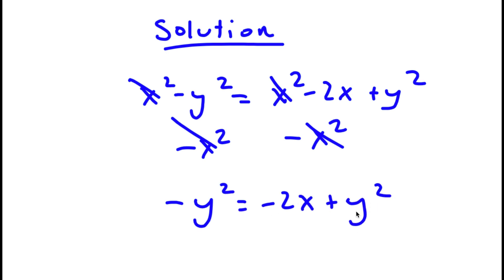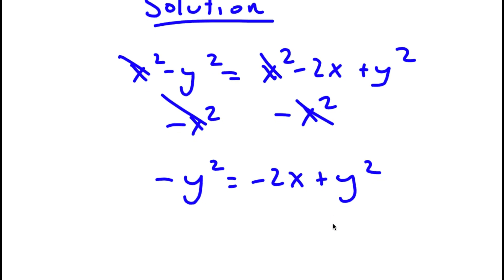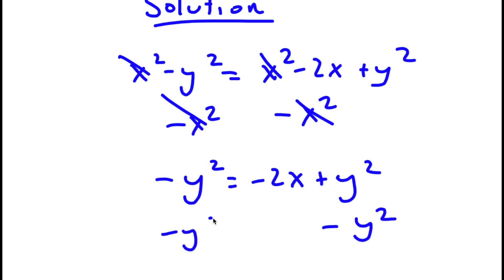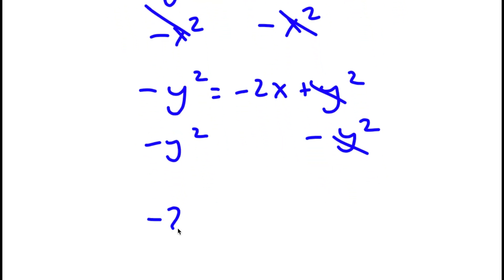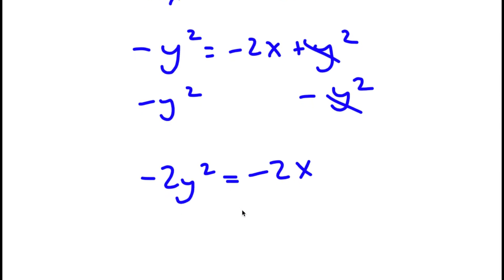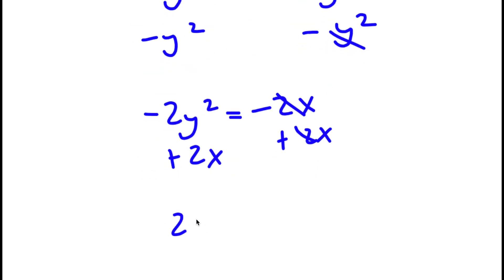Now I'm going to subtract y squared on both sides. These two cancel out and negative y squared minus y squared is negative 2y squared, so negative 2y squared is equal to negative 2xy. If I add 2xy on both sides these cancel out and I'm left with 2xy minus 2y squared is equal to 0.